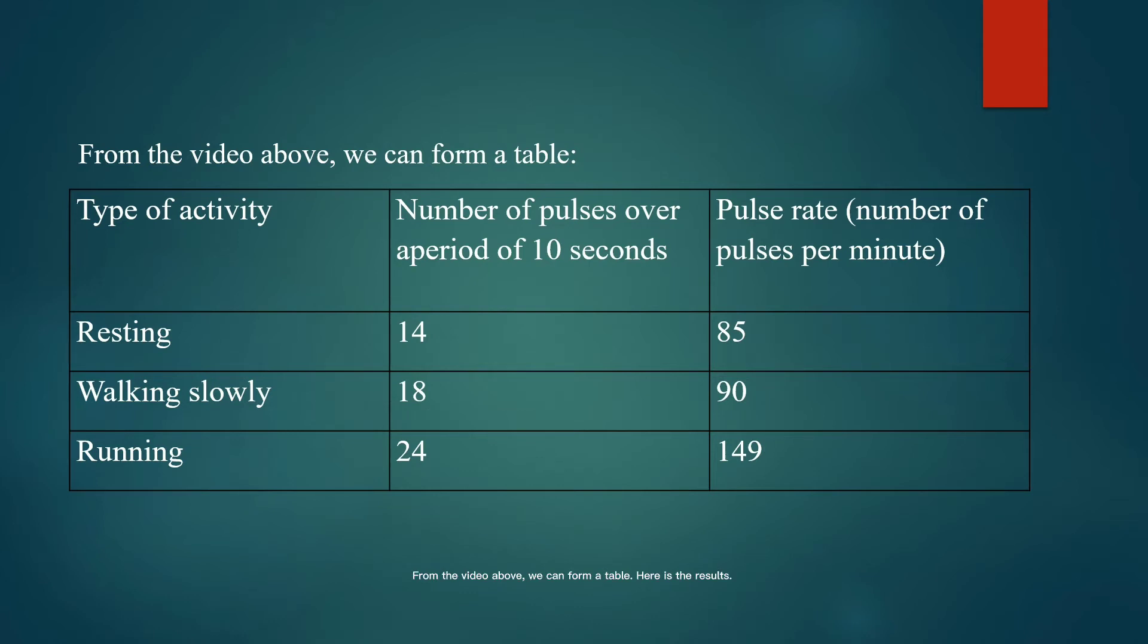The number of pulses over a period of 10 seconds after conducting the first activity which is resting is 14, while walking slowly is 18 and running is 24. Meanwhile the pulse rate after conducting the activities is 85 for resting, 90 for walking slowly, and 149 for running.